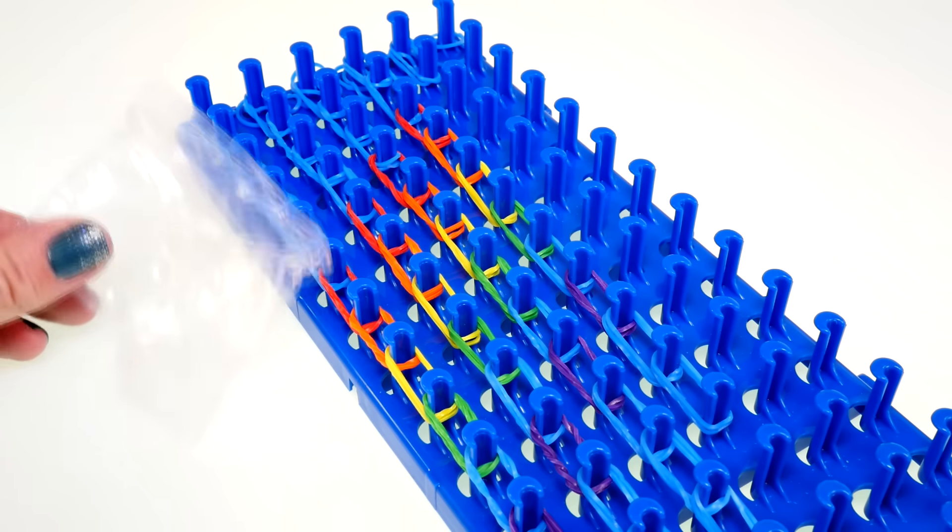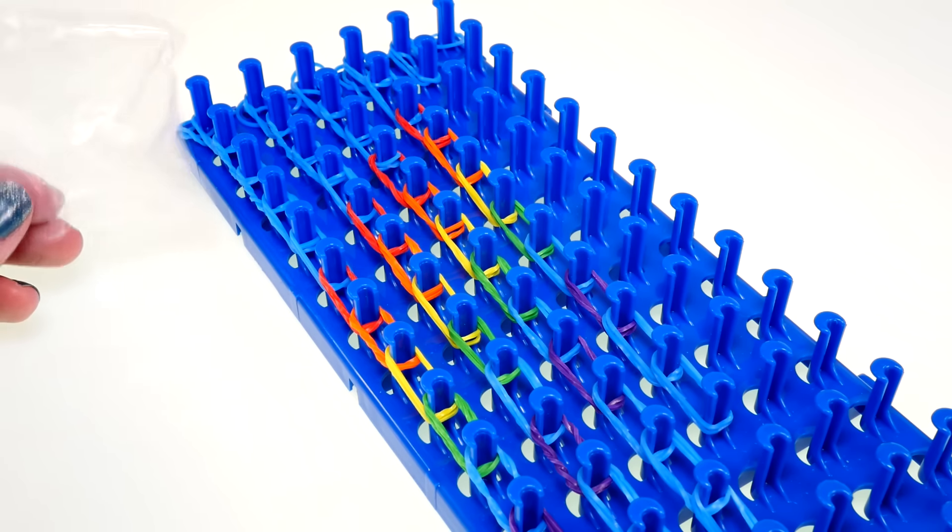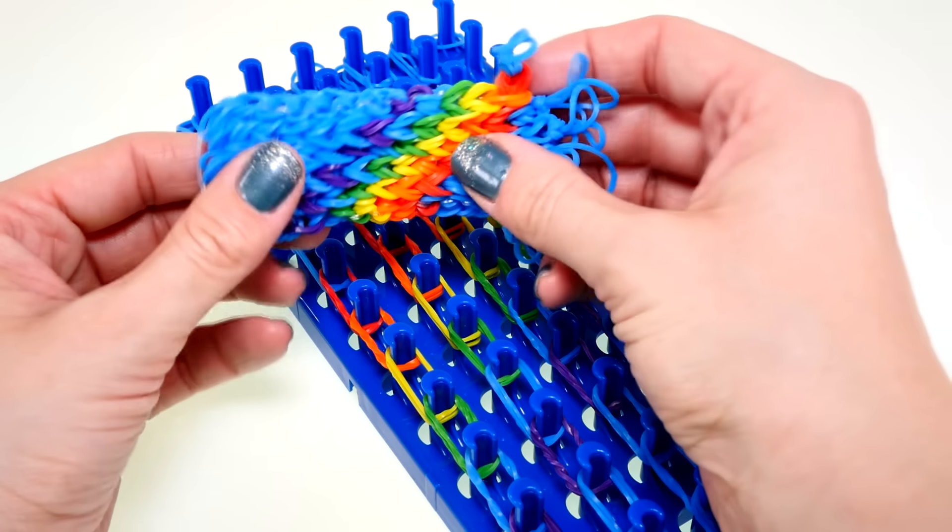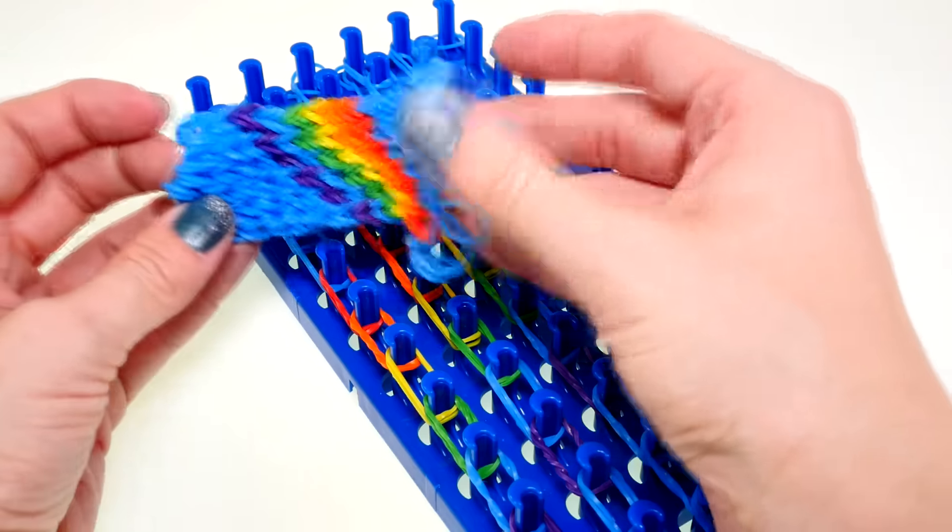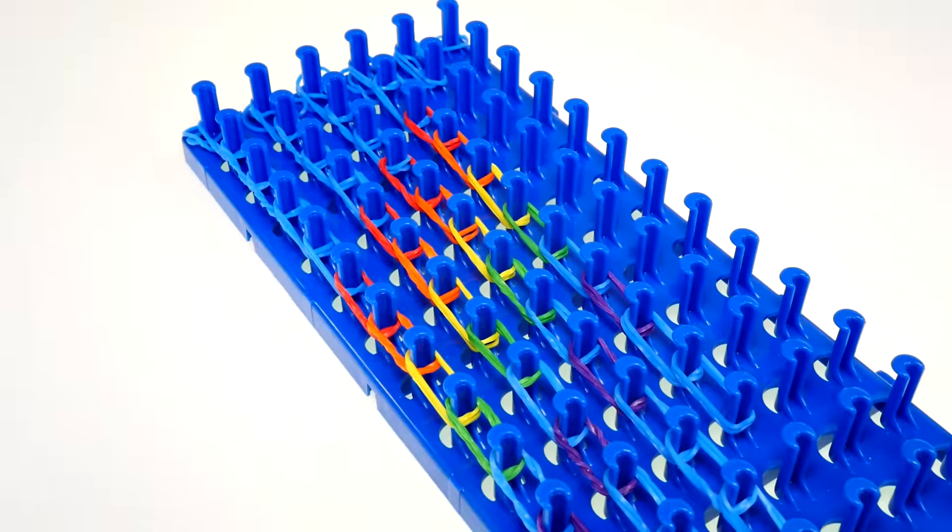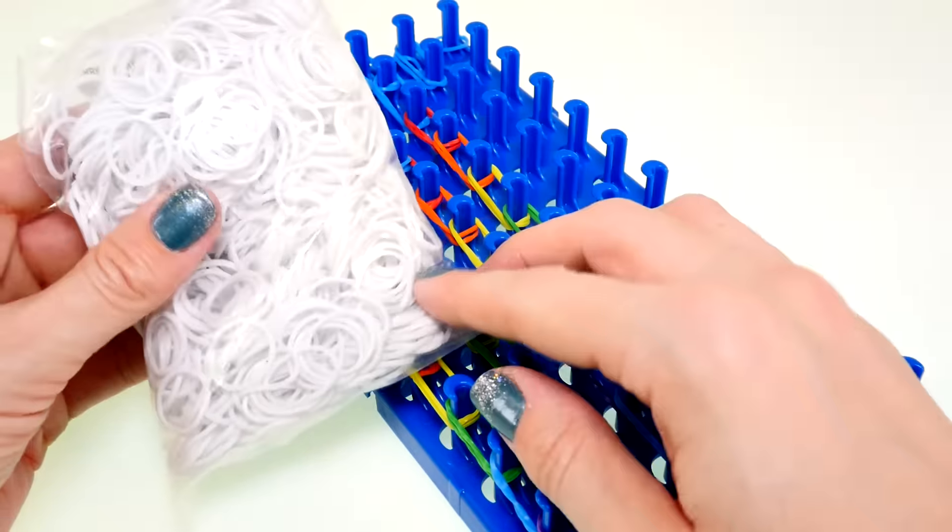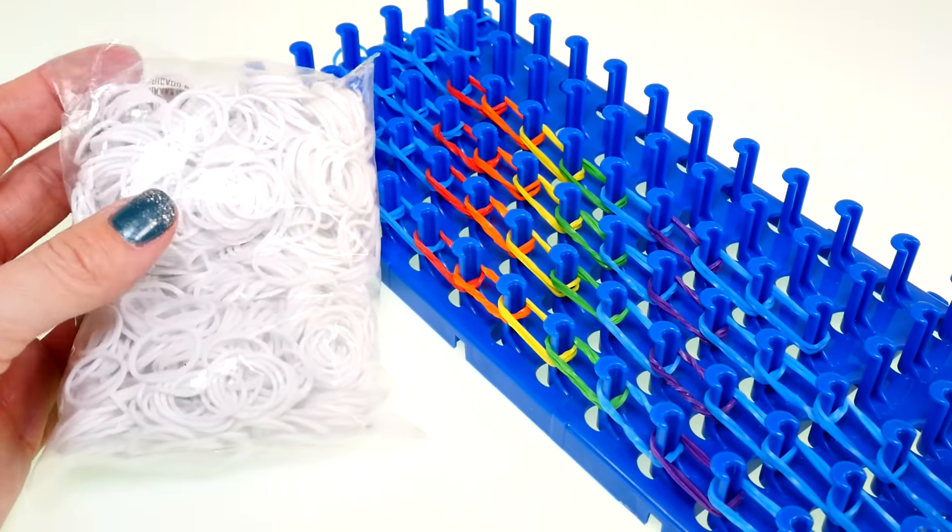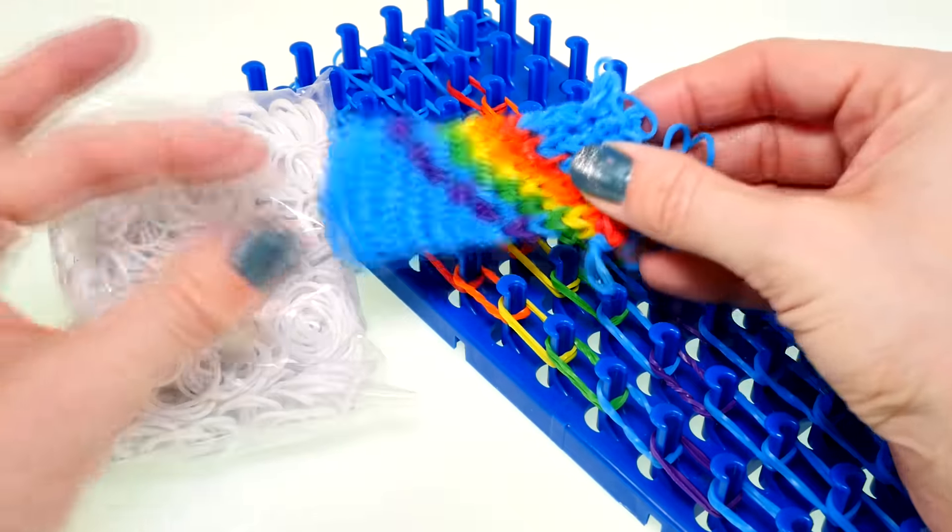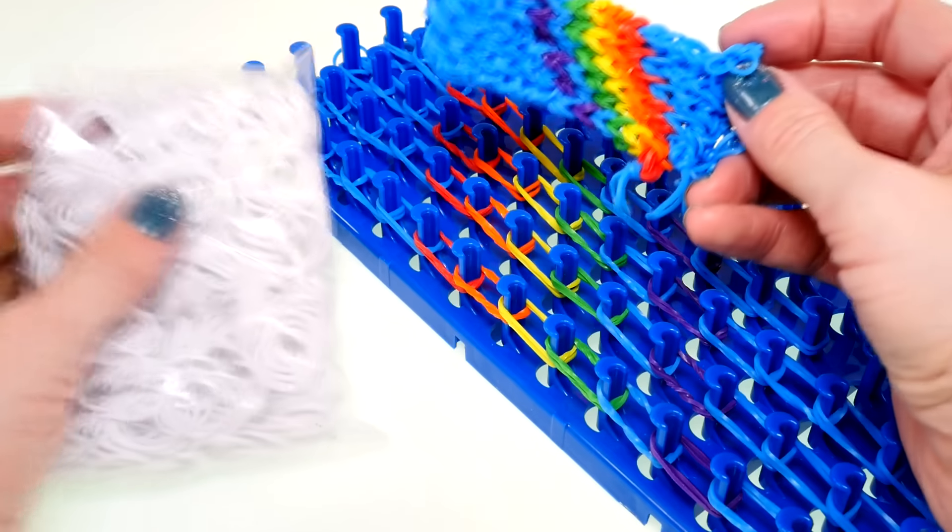Oh, it looks like I am completely out of blue rubber bands, so unfortunately it doesn't come with quite enough blue rubber bands to finish this pattern. But what I'm gonna do is use white rubber bands instead, so hopefully what I'm thinking is that it'll just look like clouds maybe and it'll be kind of a funky pattern. So let's see how this turns out.